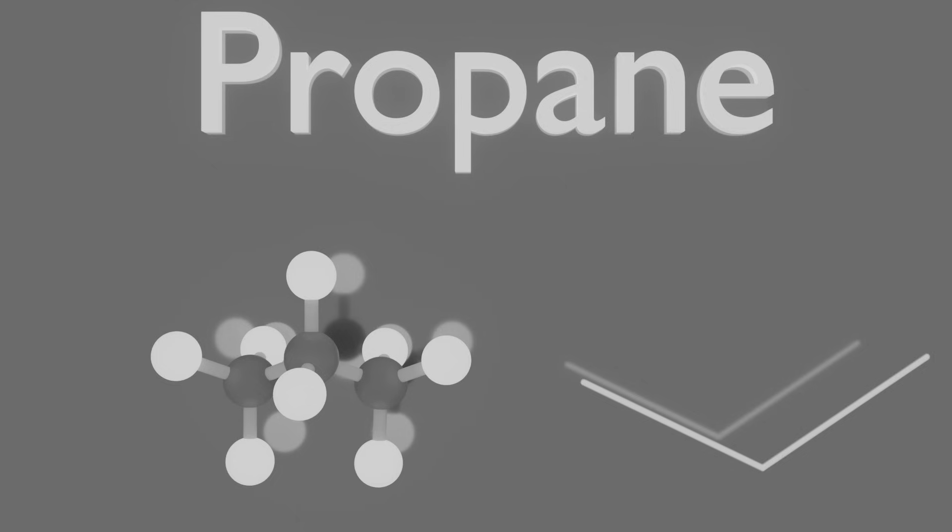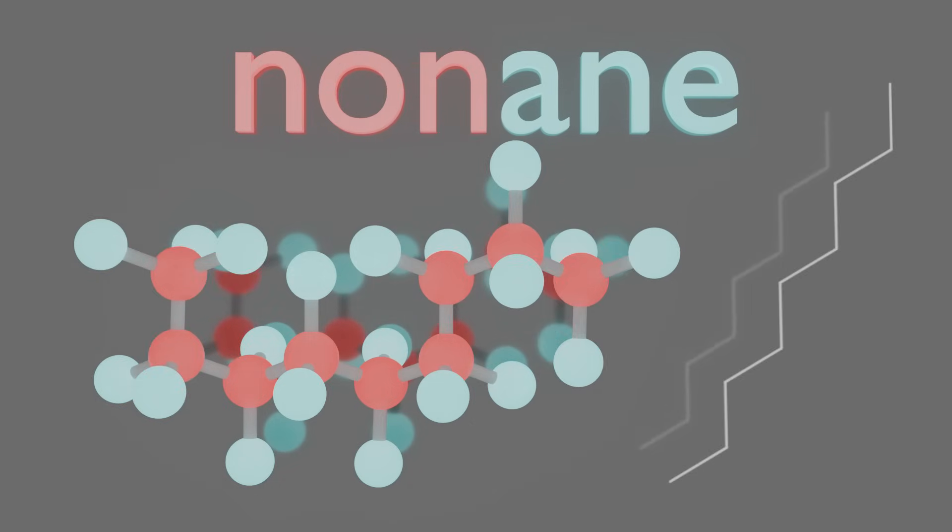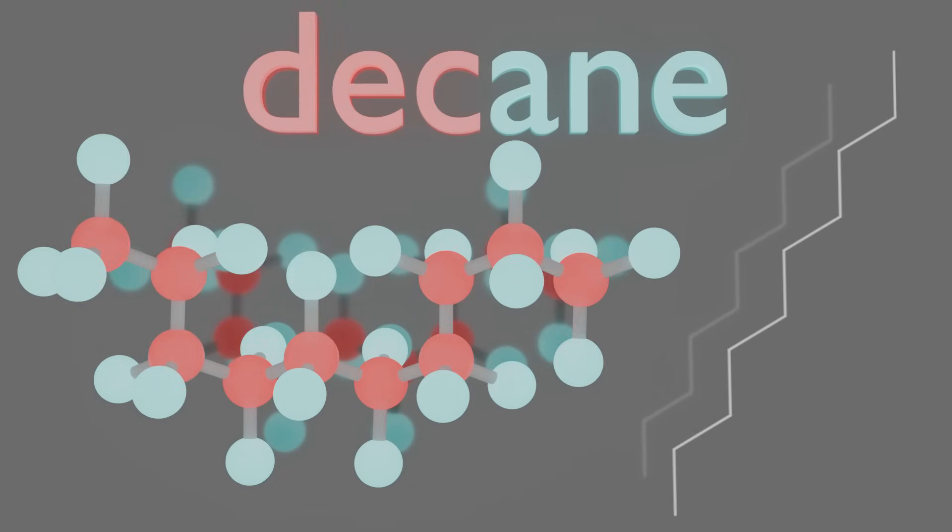Why propane, you ask? Well, it's because of two parts. Prop basically means three carbons. And -ane means kind of like a plain chain. All these parts of the names will be replaceable. So, for example, we can replace prop with any other number. So, scaling up, we have meth, eth, prop, but, pent, hex, hept, oct, non, same prefix the dec, and that's where I'll finish off.